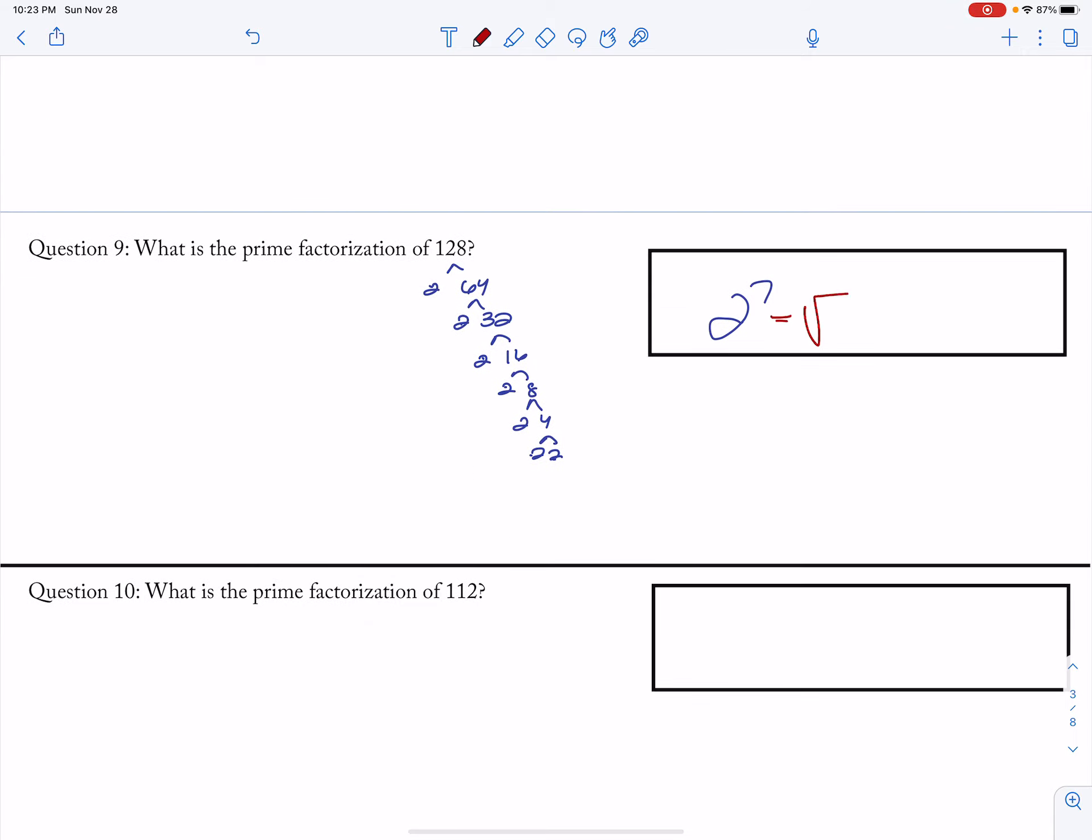This could have been rewritten as 2 squared, 2 squared, 2 squared, and 2. So then this is 2 times 2 times 2 root 2. So this is 8 root 2.